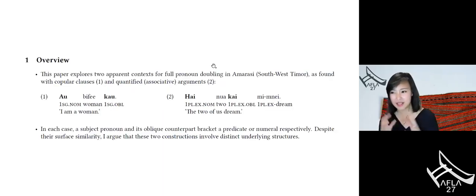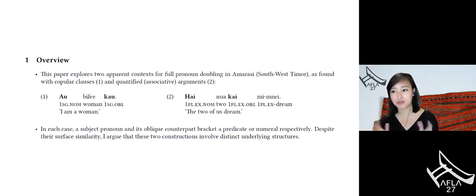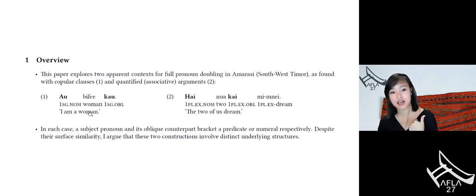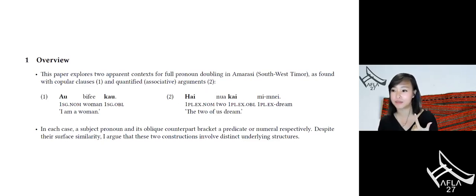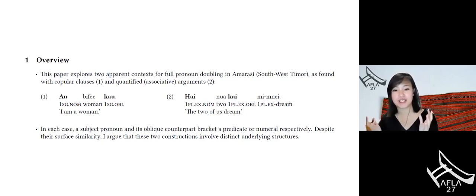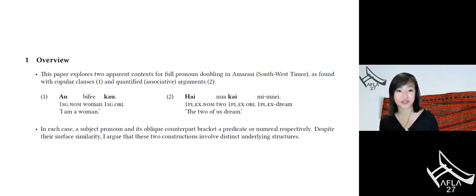This presentation focuses on two types of constructions in which we find doubling of a full pronoun — a pronoun that is not reduced or enclitic. First, copular constructions, where the predicate is nominal or adjectival, as in 'I am a woman.' Second, when you have a quantified argument or something with an overt numeral, like 'all of us dream.' In each case, a nominative subject pronoun and its oblique counterpart bracket the intermediate predicate or numeral respectively. Despite the surface similarity, I'm going to argue they actually instantiate two distinct constructions.